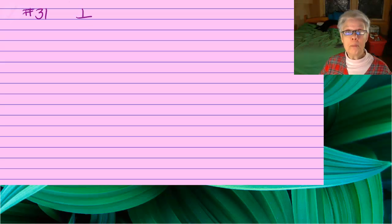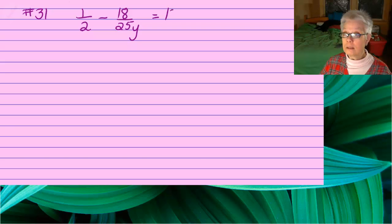So number 31: 1 over 2 minus 18 over 25y equals 12 over 25 minus 1 over 10y.